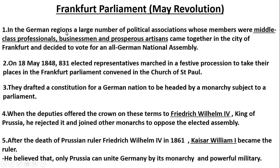In the German area there were a lot of political organizations and members who were middle class professionals, businessmen and rich artisans. All these people gathered in Frankfurt City and decided to vote for a German National Assembly as part of the German unification process. In 1848, 831 elected representative members were sent to the church where the Frankfurt Parliament was called.